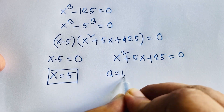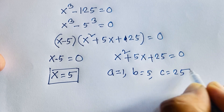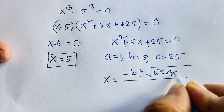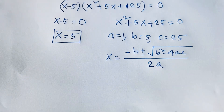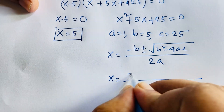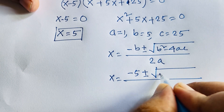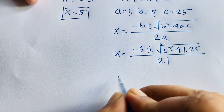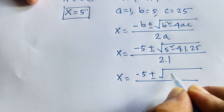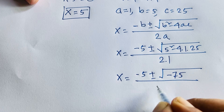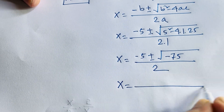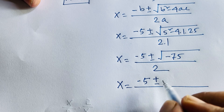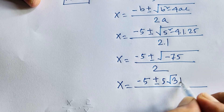Using the quadratic formula, a equals 1, b equals 5, and c equals 25. So x equals minus b plus or minus square root of (b² minus 4ac) over 2a, giving x equals minus 5 plus or minus square root of (25 minus 100) over 2, which is minus 5 plus or minus square root of negative 75 over 2. Since square root of 75 is 5√3, and square root of negative 1 is i, this gives minus 5 plus or minus 5√3 i over 2.